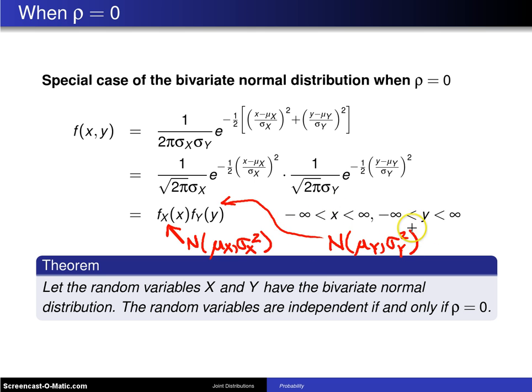So here is a theorem that essentially we've just finished proving. Let the random variables X and Y have the bivariate normal distribution. The random variables are independent if and only if rho is equal to 0.